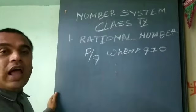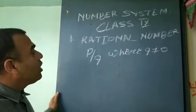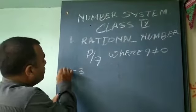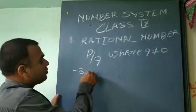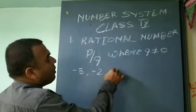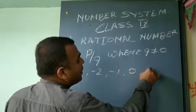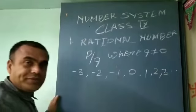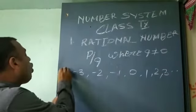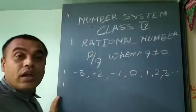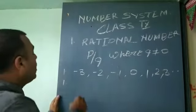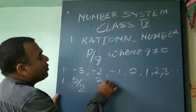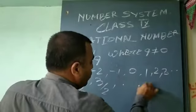So if we say minus 3, minus 2, minus 1, 0, 1, 2, 3, and so on — all these are rational numbers. All the fractions also come under rational numbers, such as 5 by 2, 3 by 2, and so on.